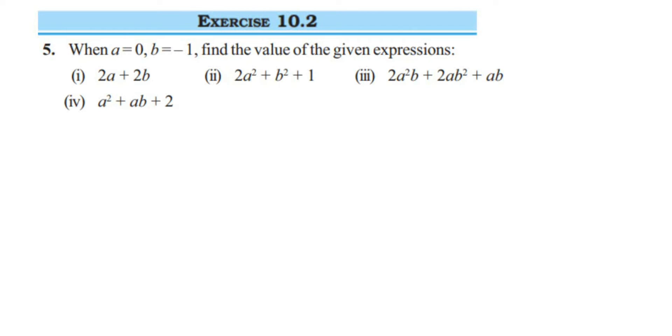Hey everyone, here's a question from Exercise 10.2, fifth question. The chapter is algebraic expressions of Class 7. This question is somewhat similar to the previous question but the value of a and b is different. The question is: when a is equal to 0 and b is equal to minus 1, find the value of the given expressions. They have given four different expressions. We have to substitute the value of a and b here and get the value of the given expression.